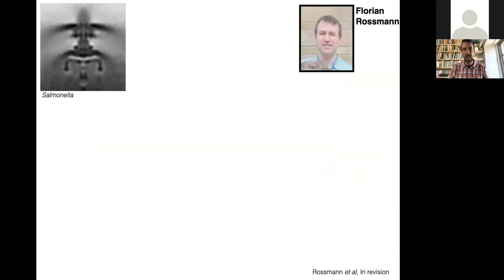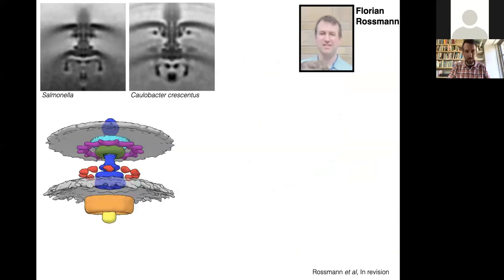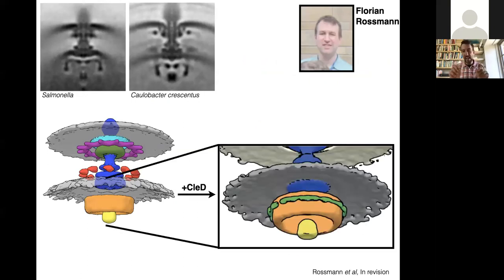Then just as a final slide, this paper was in revision when I made this slide, but was accepted for publication two days ago. FliI was very interested in transient binding of signaling proteins. Florian focused on another species called Caulobacter crescentus, which has some quite interesting aspects to it. This is a 3D rendering of the Caulobacter flagellar motor, and then he added a signaling protein called CheD, and we were able to actually directly visualize the binding of CheD around the edge of the C-ring in Caulobacter.